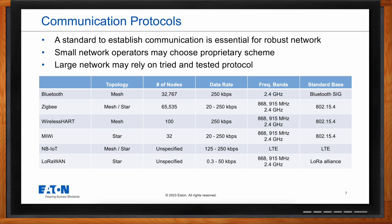NB-IoT, or Narrowband Internet of Things, is a cellular communication protocol designed specifically for IoT, providing low-power wide-area coverage for connecting devices over cellular networks — suitable for long-range, low-power applications. LoRaWAN, or Long Range Wide Area Network, is designed for long-range, low-power IoT deployments. It utilizes LoRa modulation technology to enable communication over long distances, making it suitable for smart city solutions, agricultural monitoring, and industrial automation.